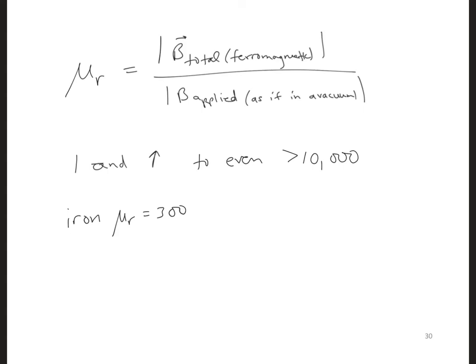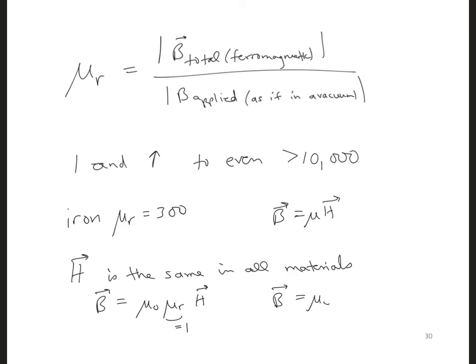So just as for the D field, the final note I'll make here is that H, remember B is equal to mu H. So H is the same in all materials, just like we saw the D field was the same in all materials. So in air, we have B is equal to mu naught mu r times H, and mu r is equal to 1 here. And in a magnetic material, B again is equal to mu naught mu r times the same H, but mu r can be different, it would be different for magnetic material.